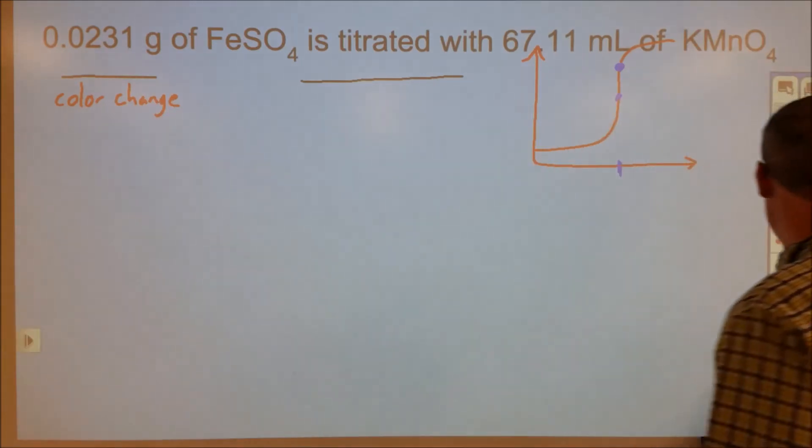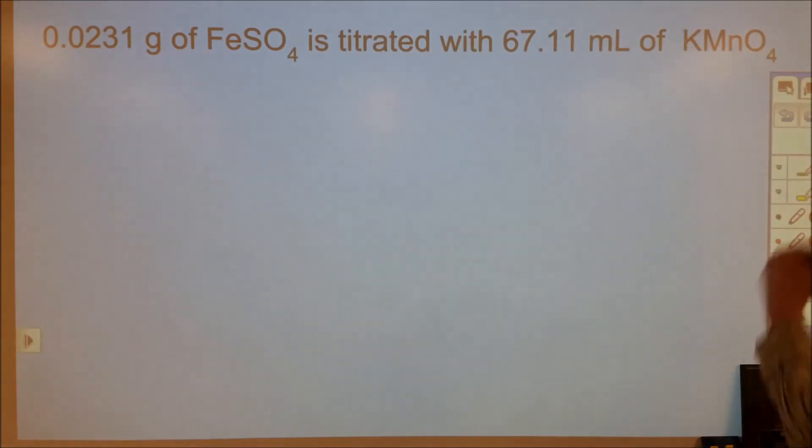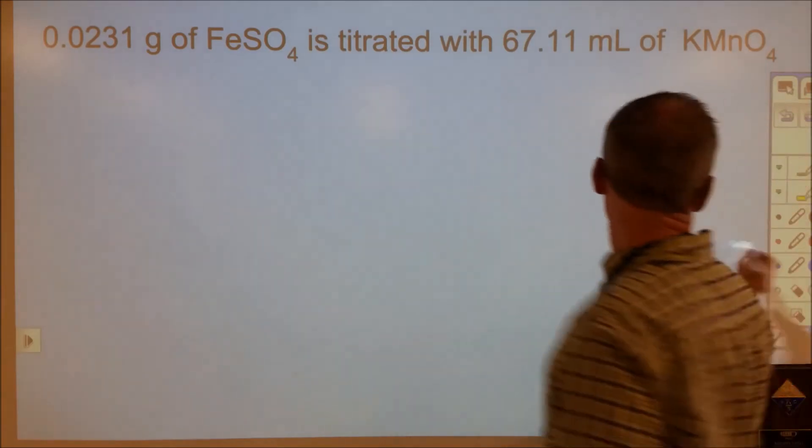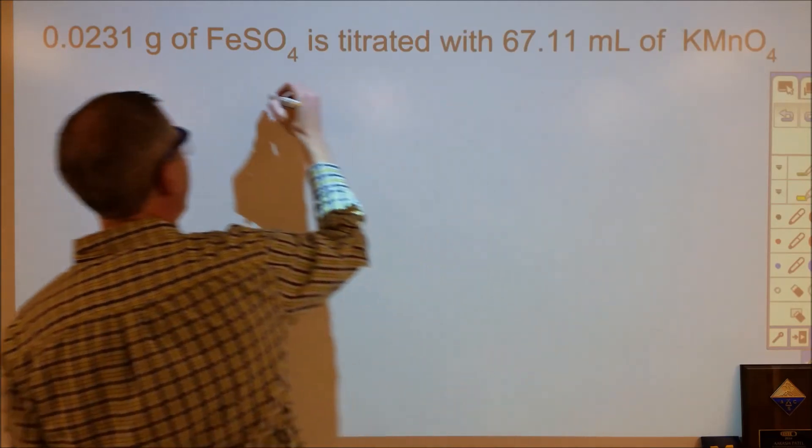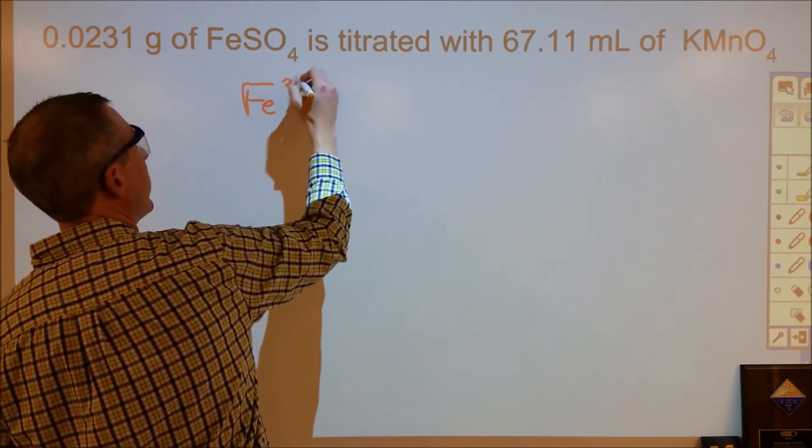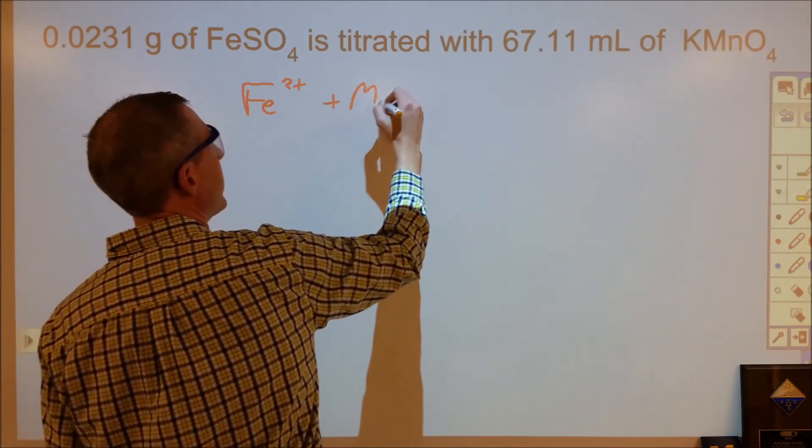Okay, so here's a sample titration problem. It's a redox titration. So first of all, we need to figure out what reaction is going on here. So we have iron sulfate and potassium permanganate. That's going to be a redox reaction. We're going to assume that this is under acidic conditions.